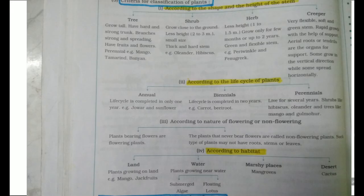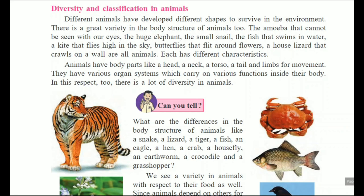These are different criteria which can be used for the classification of plants. Now the next part is the diversity and classification of animals. In living things, not only plants but also animals and insects are there. Different animals have developed different shapes to survive in the environment — there is great variety in the body structure of animals.